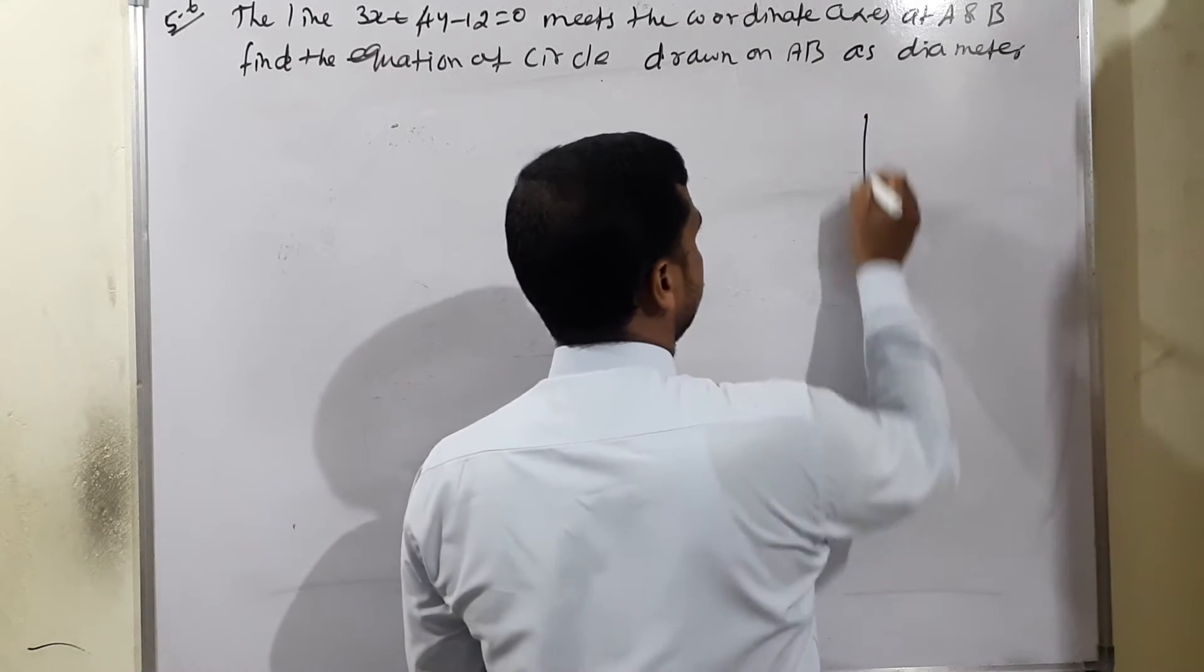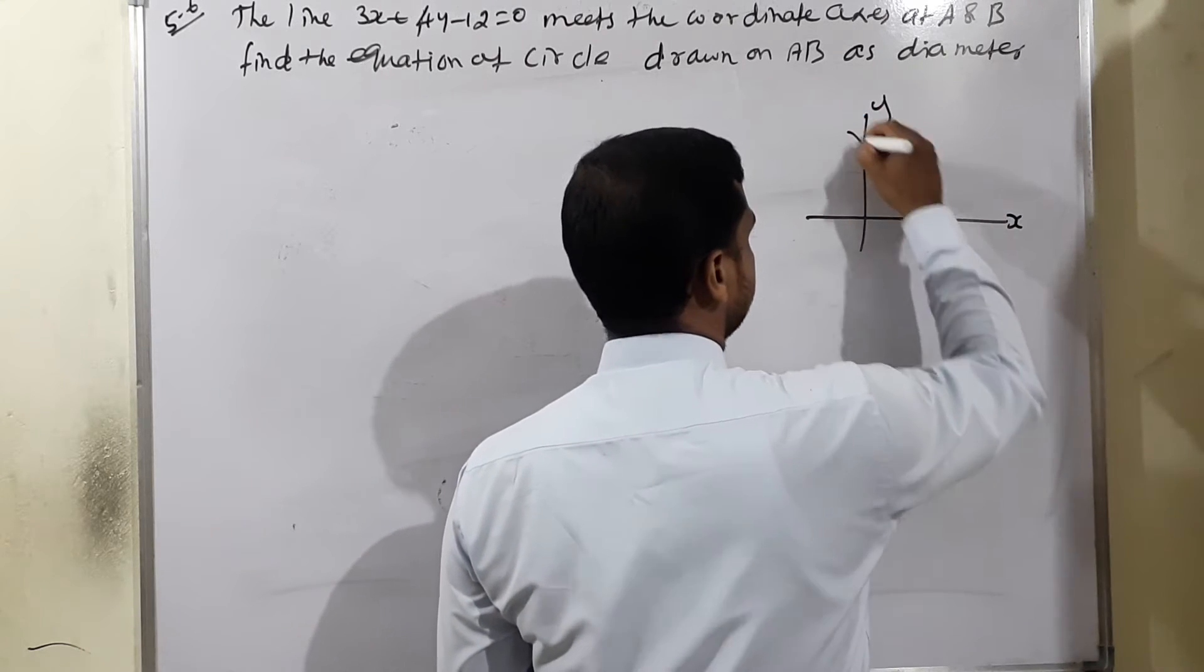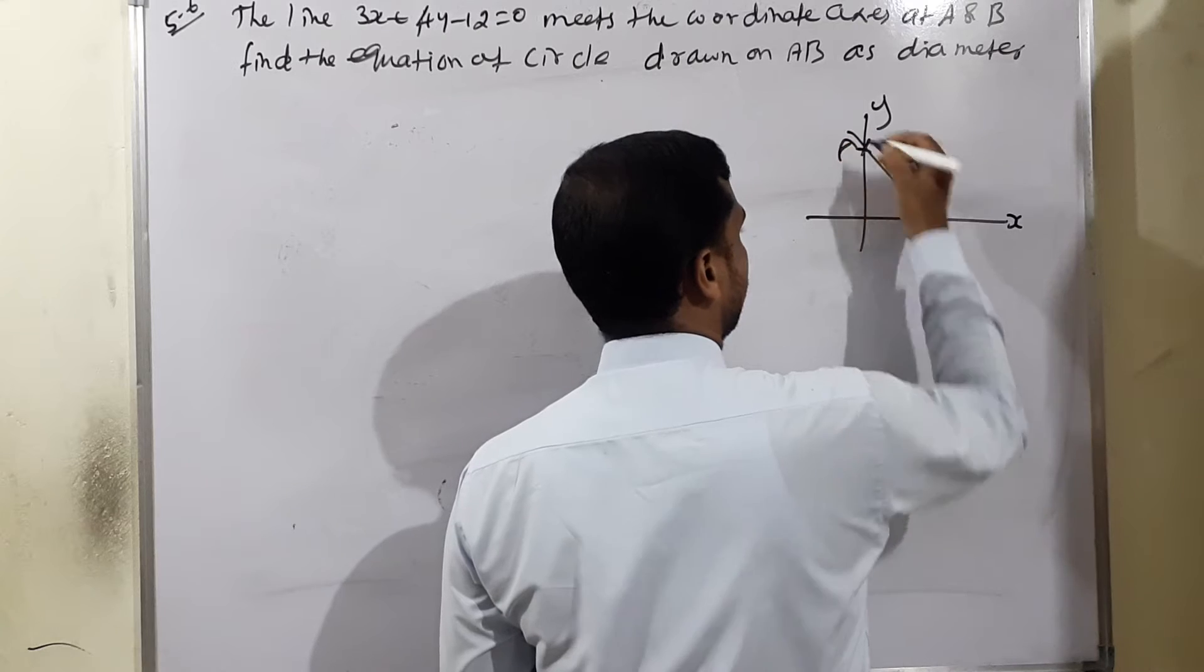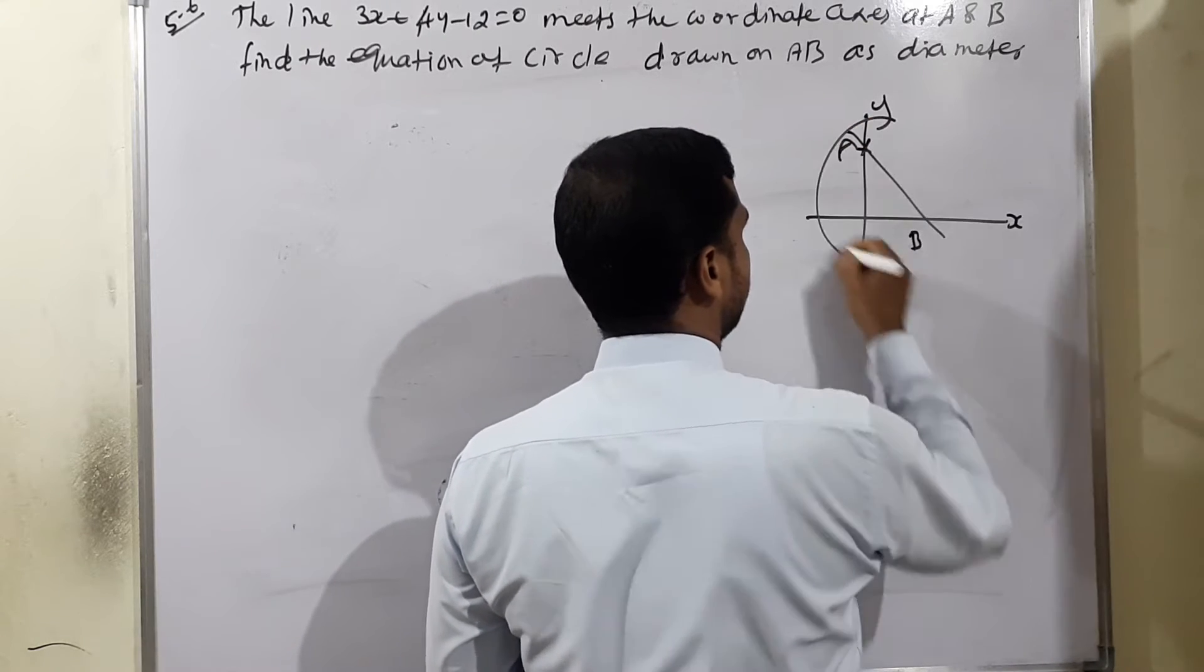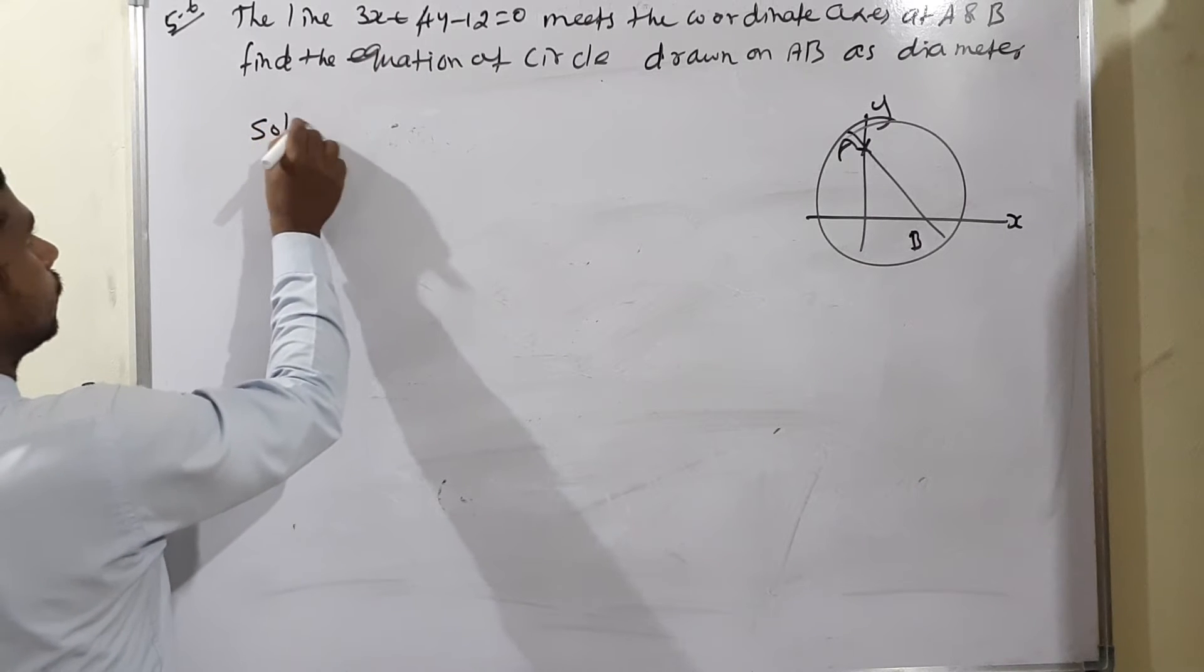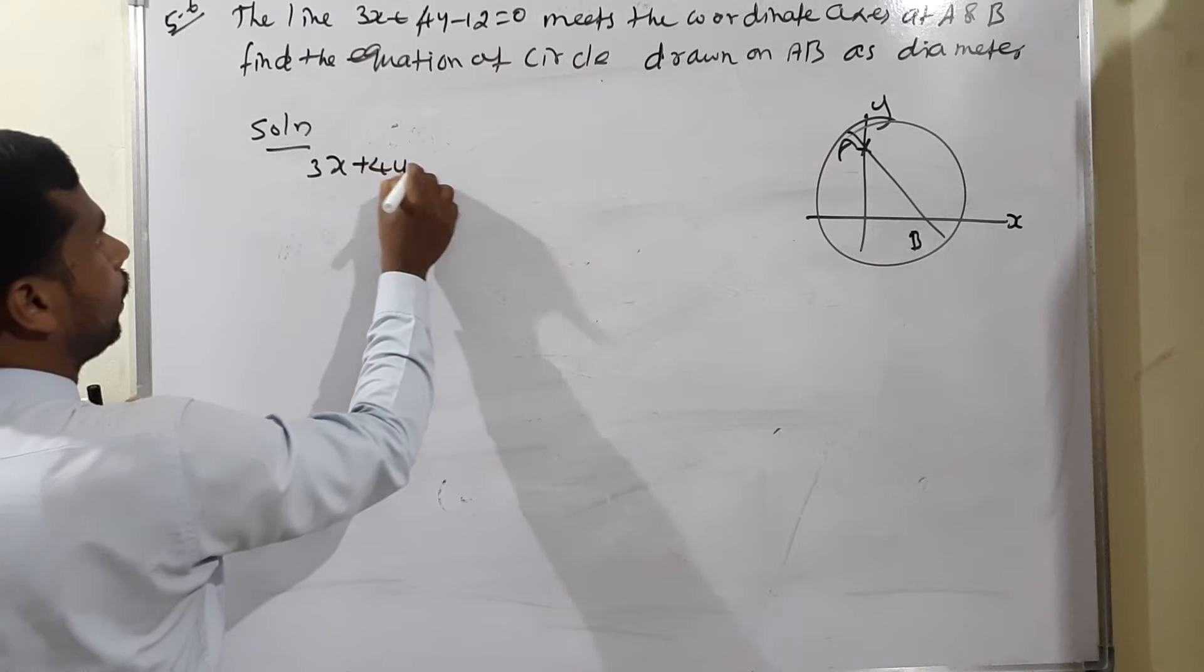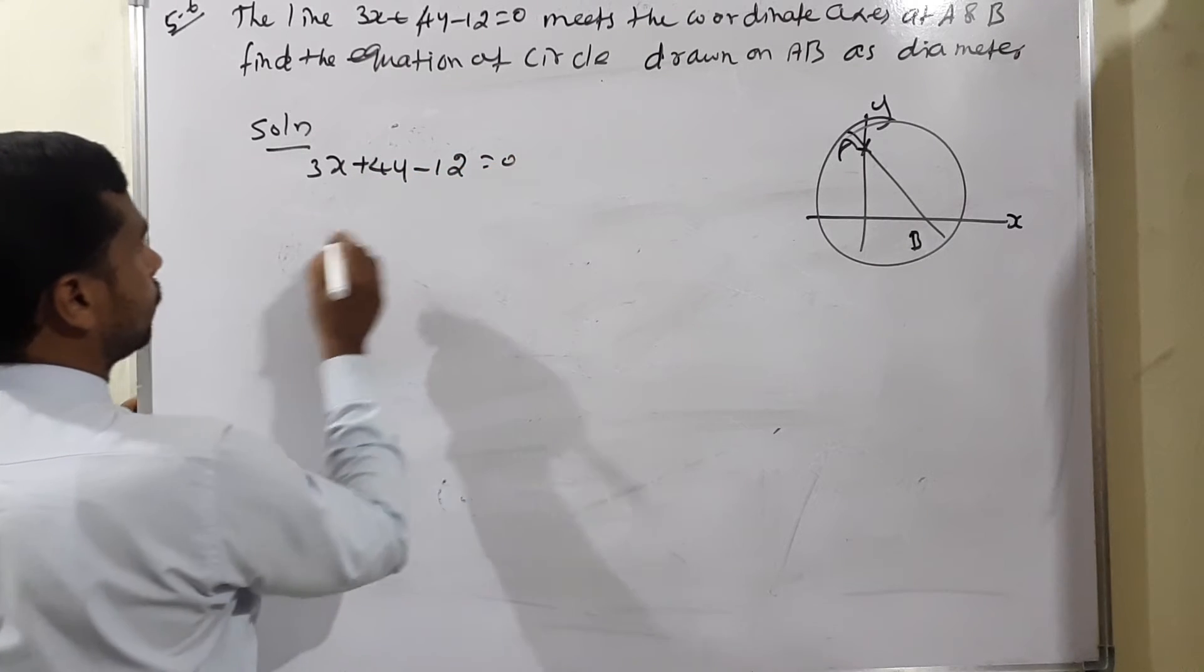We have the x point and y point as the intersecting points. This is point A, this is the circle. The meeting point - what is the point? Solution: 3x plus 4y minus 12 equals 0.